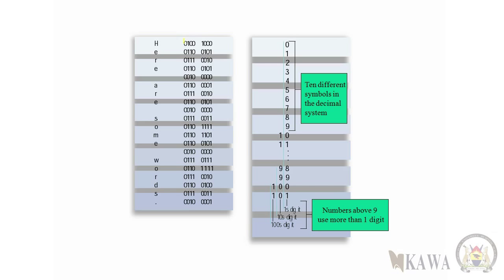Take an example: a computer converts data into numbers. For example, this word here — a computer can't understand letters directly, but a computer understands numbers. Every letter is represented by a certain number: H is 01001000, E is 01100101, R is 01110010, like that. That's how a computer reads data. Surprisingly, the spaces in between the words are also represented by numbers.